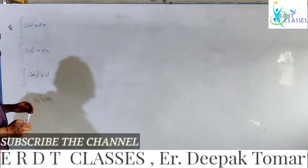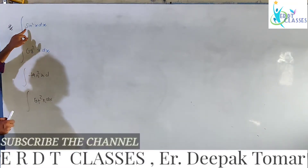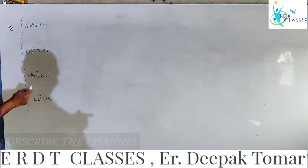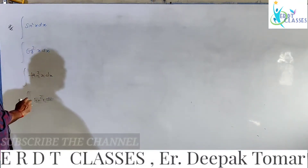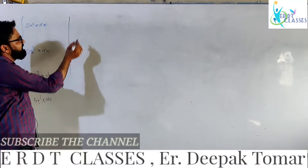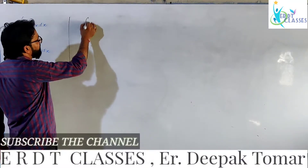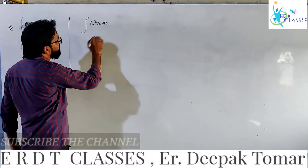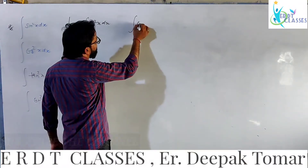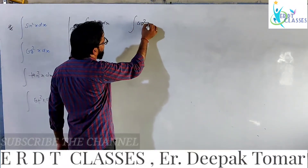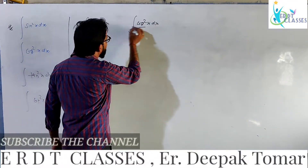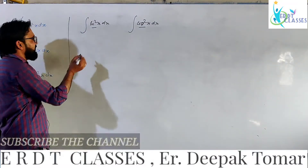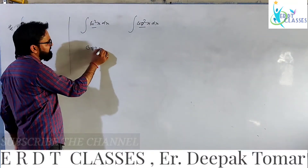This is the integration of sin square x, cos square x, tan square x, and cot square x. When we talk about integration of sin square x or cos square x, we will use cos 2x to help us.